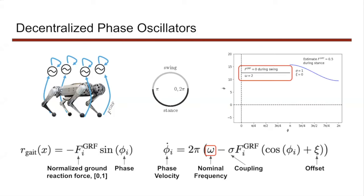The oscillators advance at nominal frequency during swing and are indirectly coupled through ground reaction forces, speeding up towards the middle of stance if forces are felt around the beginning, as the leg is needed to support the robot. Toward the end of stance phase, if the leg continues to experience high forces, it is still needed to support the robot, and the phase velocity slows down to remain in stance phase longer.